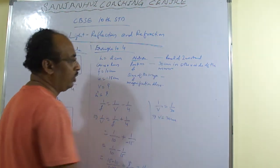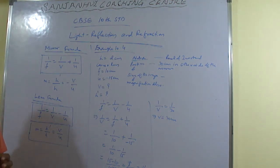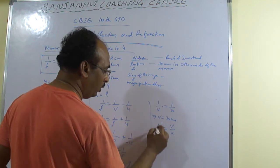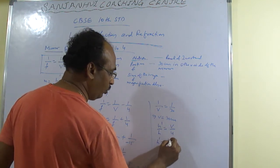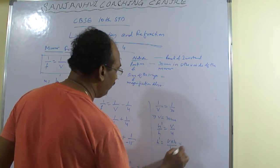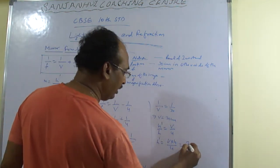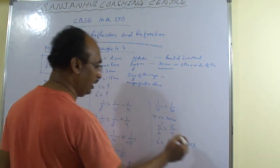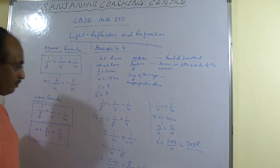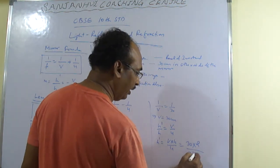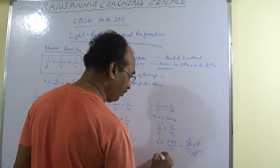Now size of the image we need to find. Size of the image we need to find h. So h dash by h is equal to v by u. So h dash is equal to v into h by u. V is what? V we have found, 30 cm. So 30 into h what it is given to us? As 2. And u is given to us? Minus 15. Yes or no? Yes sir. Minus 15. So it has become 2. So h dash has become?